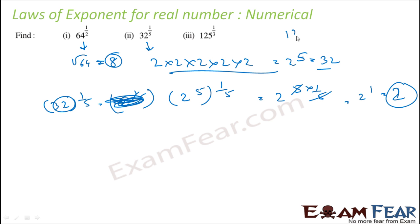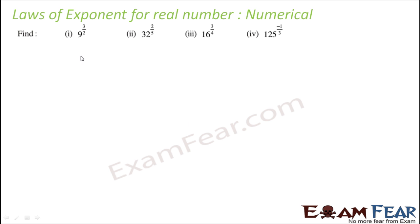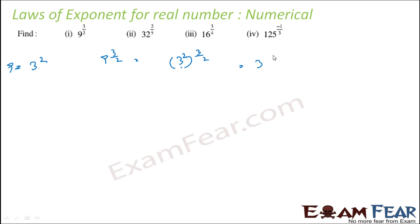Similarly, 125 to the power 1 by 3: since 125 equals 5 to the power 3, we write 5 to the power 3, raised to the power 1 by 3. Applying the rule a to the power m times n, we get 5 to the power 3 times 1 by 3. The 3's cancel, giving 5 to the power 1, which is 5. Next: 9 to the power 3 by 2. Since 9 equals 3 squared, we write 3 to the power 2, raised to the power 3 by 2, giving 3 to the power 3, which is 27.